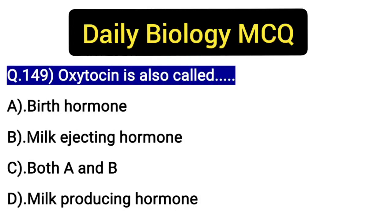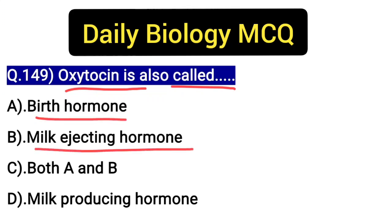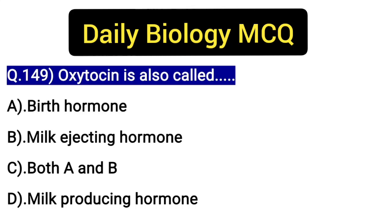Hello everyone. Welcome to our live online classes. This is Praveen here, and today's MCQ for biology is: oxytocin is also called — A) birth hormone, B) milk ejecting hormone, C) both A and B, or D) milk producing hormone. Student, option 1 is childbirth and option 2 is milk excretion.